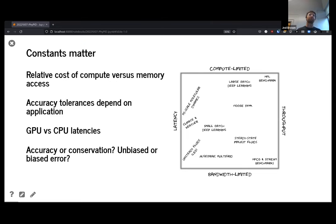In high-performance computing, we care a lot about the relative cost of compute versus moving memory around. If you're limited by moving memory around, then optimizations that improve compute may not impact you. And if you shift the algorithm in some way, perhaps you land in a regime where now you're limited by compute. The cartoon on the right shows different algorithms or application areas and where they land on this diagram.